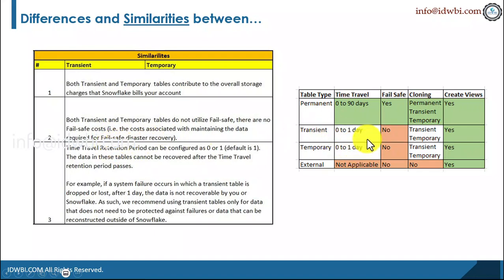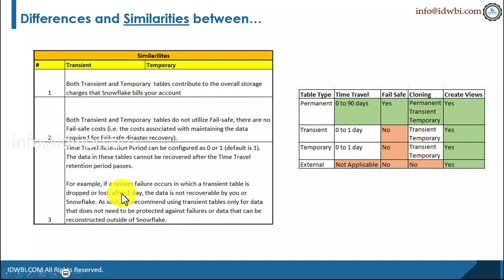Time travel for both of these is only zero to one day — the default is one day — which means data in these tables cannot be recovered beyond that retention period. For example, if there is some failure and transient table data is dropped or lost for whatever reason, after that particular day you cannot recover that data. Wherever recovery is needed, you should create permanent tables; otherwise, transient or temporary tables are fine.